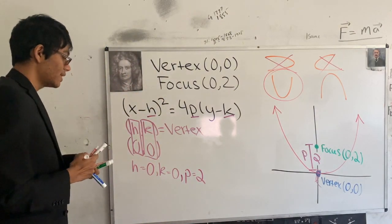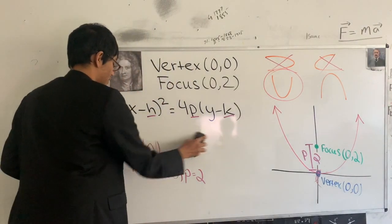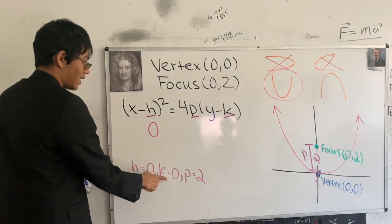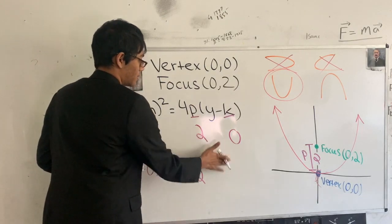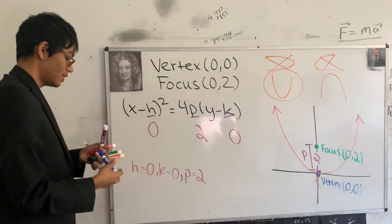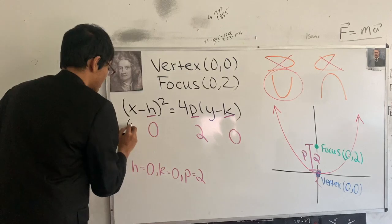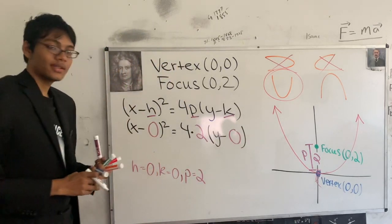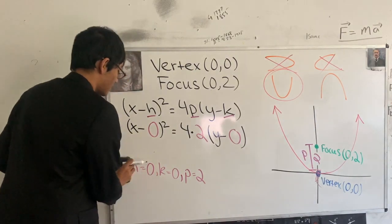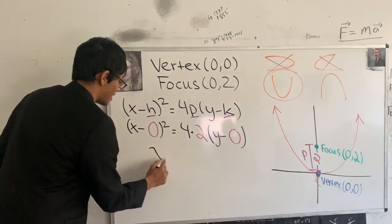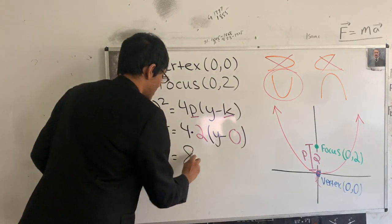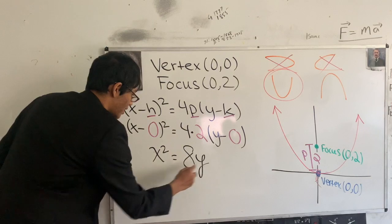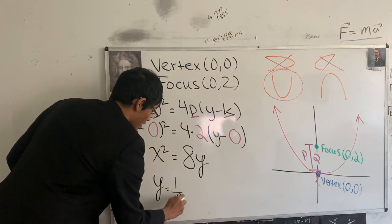Now all we have to do is plug in. Under the general equation: (x − 0)² = 4 × 2 × (y − 0). Simplifying, x² = 8y. Or you can isolate y to get y = (1/8)x².